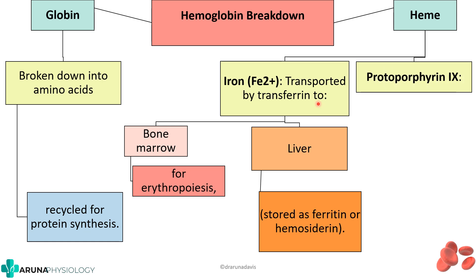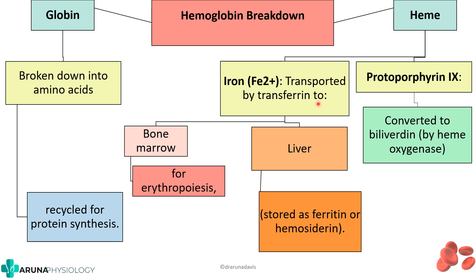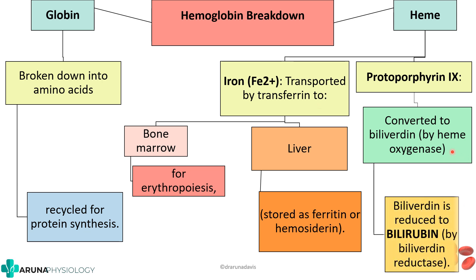What happens to the protoporphyrin part? That will be converted to biliverdin by the enzyme heme oxygenase, which in turn will be converted to bilirubin by the enzyme biliverdin reductase. The most important part is what happens to this protoporphyrin ring, because that is what forms bilirubin.